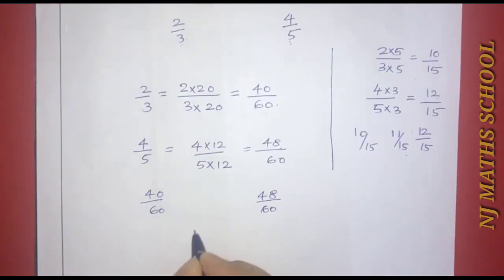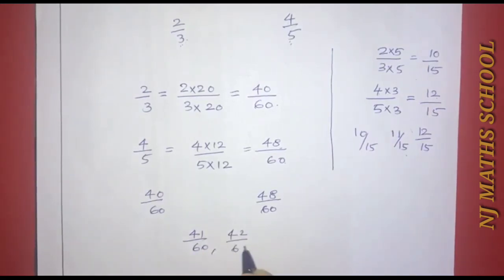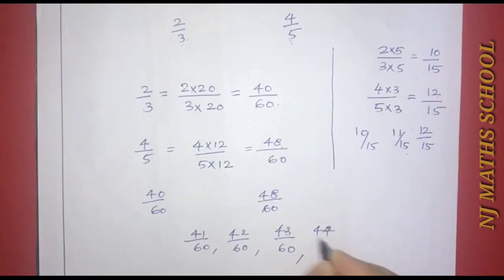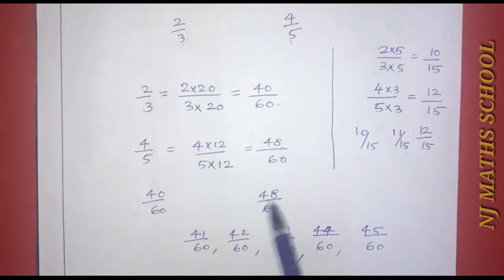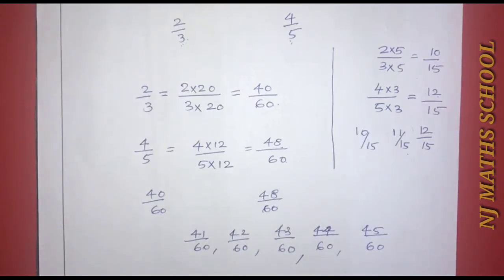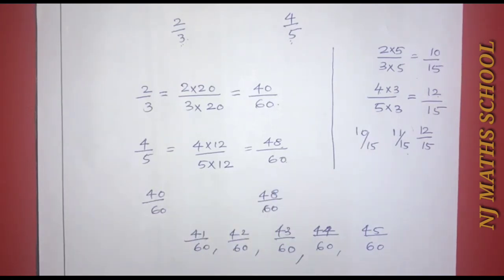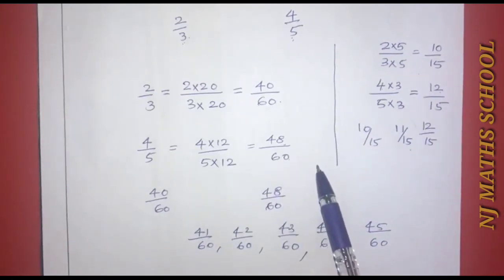Between 40 by 60 and 48 by 60, the 5 rational numbers are: 41 by 60, 42 by 60, 43 by 60, 44 by 60, and 45 by 60. We choose the denominator that gives enough numbers between the two rationals.